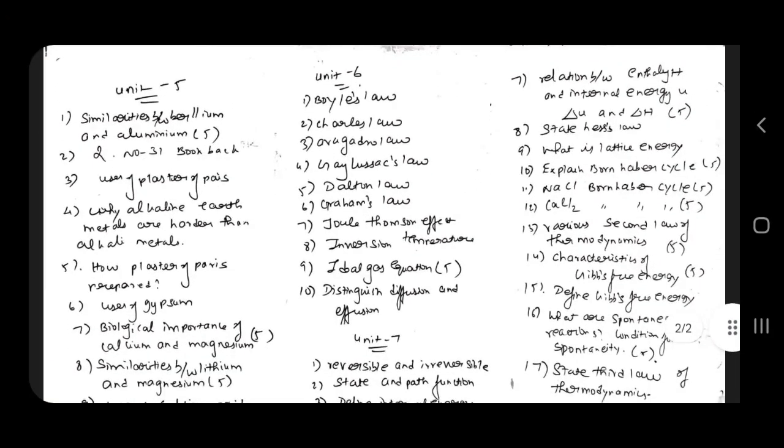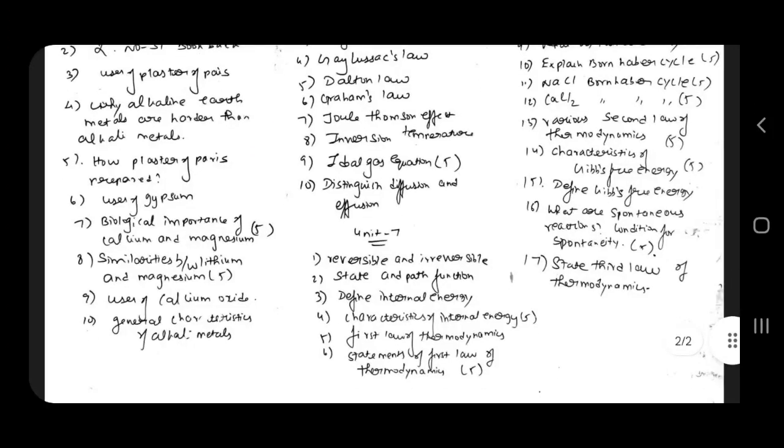Unit 5, similarities between aluminium and beryllium. Confirm, question number 31, use of Plaster of Paris 3 mark. How Plaster of Paris question? Why alkaline earth metals are harder than alkaline metals? Uses of gypsum 3. Biological importance of calcium and magnesium, similarity between lithium and magnesium, use of calcium oxide, general characteristics of alkaline metals 3 mark.